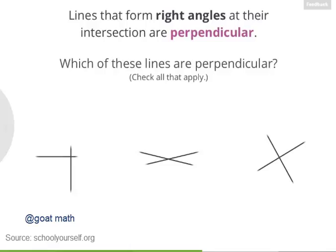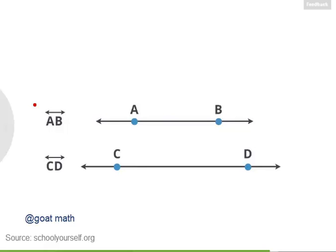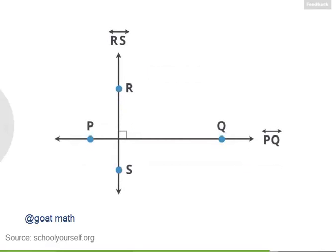So let's see some examples. Of these three pairs of lines here, which are examples of perpendicular lines? Nicely done. So these are the pairs of perpendicular lines. Now suppose you have two parallel lines AB and CD. As you may already know, one way to write down that these two lines are parallel is to draw two vertical parallel bars between them. Now suppose you have two perpendicular lines, which we'll call PQ and RS. You can write down that these two lines are perpendicular by drawing an upside down T between them. Notice that the two line segments in this T are perpendicular to each other.